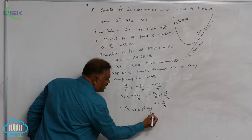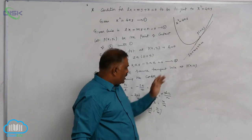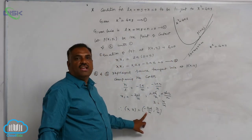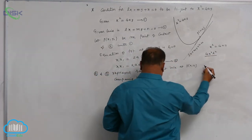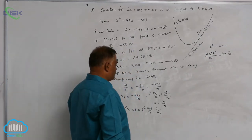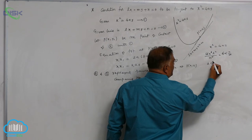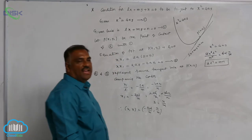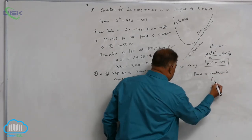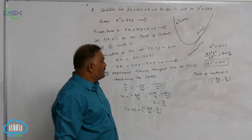So the point of contact is (x1, y1) = (−2al/m, n/m). Since this point lies on the parabola x² = 4ay, substituting gives: (−2al/m)² = 4a(n/m), which simplifies to 4a²l²/m² = 4an/m. Cancelling 4a and one factor of m, we get al² = mn. This is the condition for the line lx + my + n = 0 to be tangent to x² = 4ay, and the point of contact is (−2al/m, n/m).